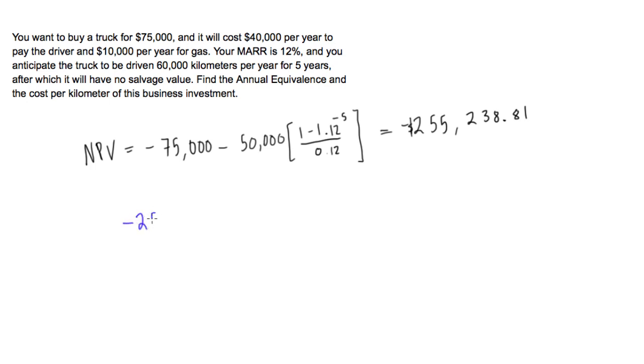We'll have negative $255,238.81 and we're using the present value of an annuity formula. So we'll have our annuity A times all of the same stuff because we're using the same minimum acceptable rate of return: (1 minus 1.12 to the negative 5) over 0.12.